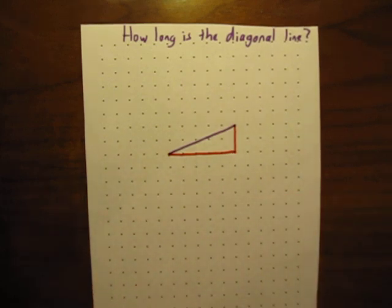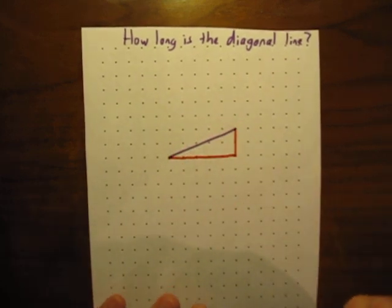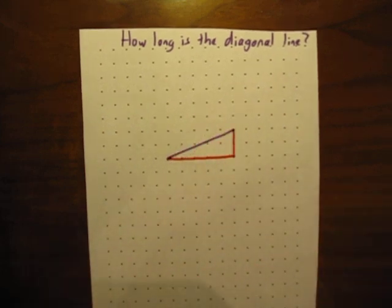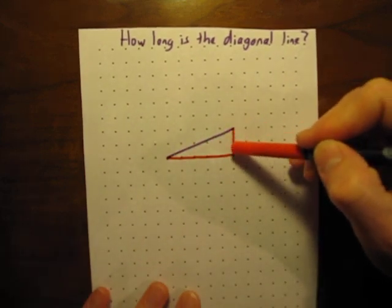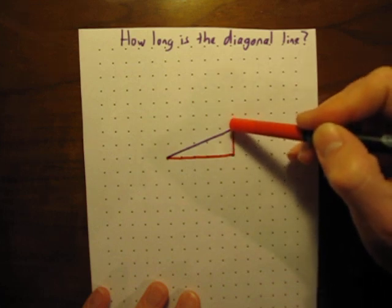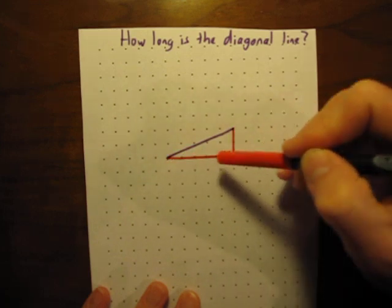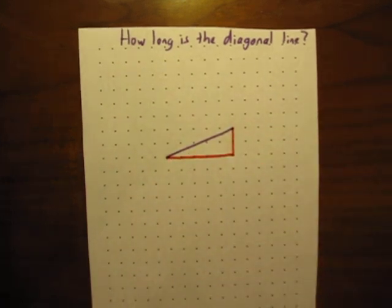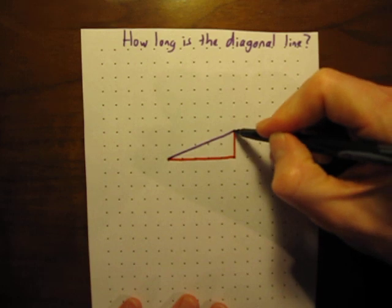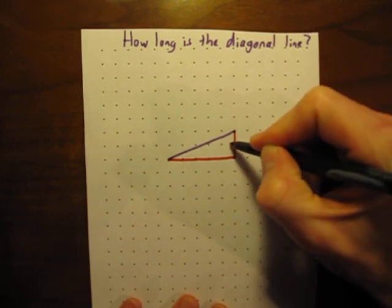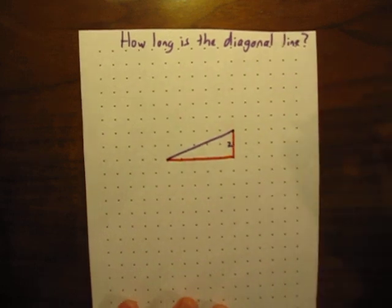Alright, we can't just count how long this diagonal line is, but we can count how long the lines are if they are vertical or horizontal. If they go straight up and down, or if they are side to side, we can just count those lengths, and that's pretty easy. So this length here is going down one, two. So this side length is two.